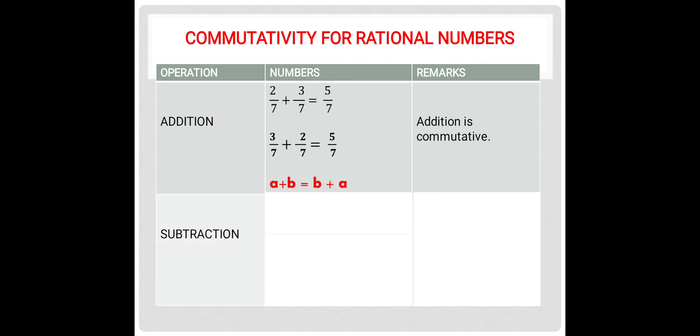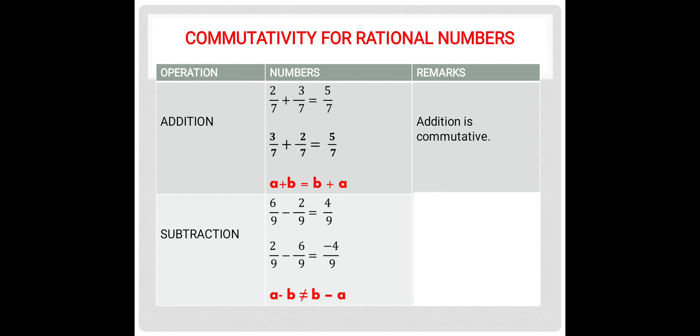Let us check for subtraction. 6 upon 9 minus 2 upon 9 equals 4 upon 9. Let us change the order: 2 upon 9 minus 6 upon 9 equals negative 4 upon 9, because 6 is the greater number and the greater number's sign appears in the answer. So when the order of the numbers is changed for rational numbers under subtraction, the answer has changed. Therefore, a minus b will not be equal to b minus a. Hence, we conclude subtraction is not commutative for rational numbers.